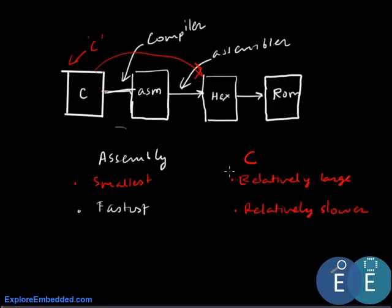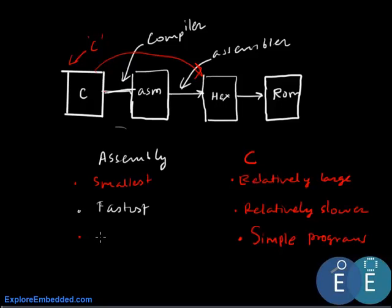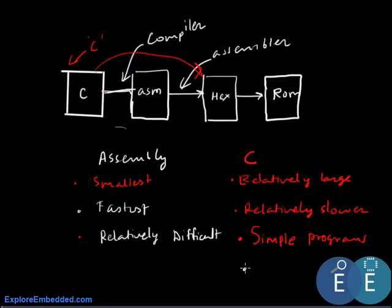The biggest advantage of C is that the language is modular and very simple to write programs. Since assembly instructions are specific to a particular controller or microprocessor, every time you write code in assembly you need to learn a new assembly language, which makes it relatively difficult. Another advantage of C is portability — code written in C for a particular controller can be ported to a different controller or processor, which is not the case with assembly.